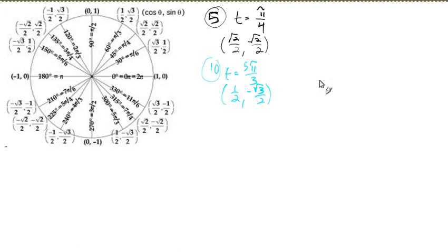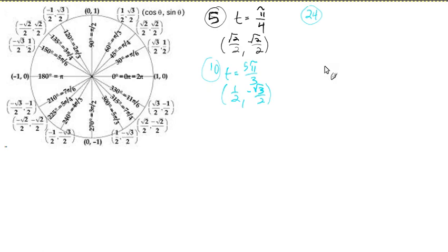Now let's move on to number 24. Evaluate, if possible, the sine, cosine, and tangent of this number: T equals 11 pi over six.